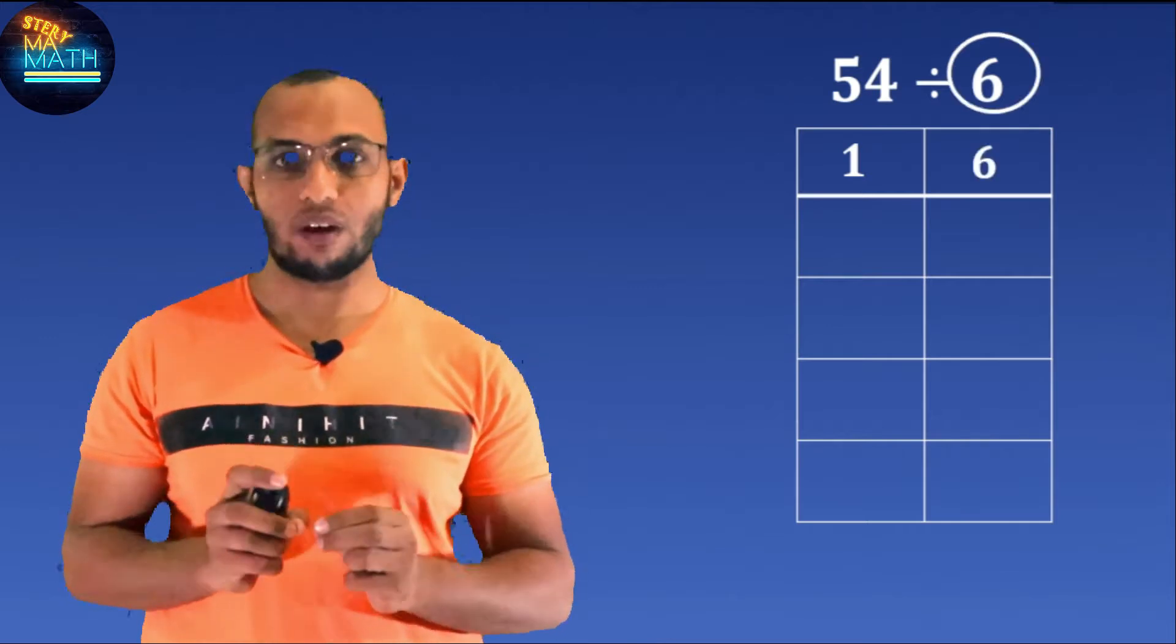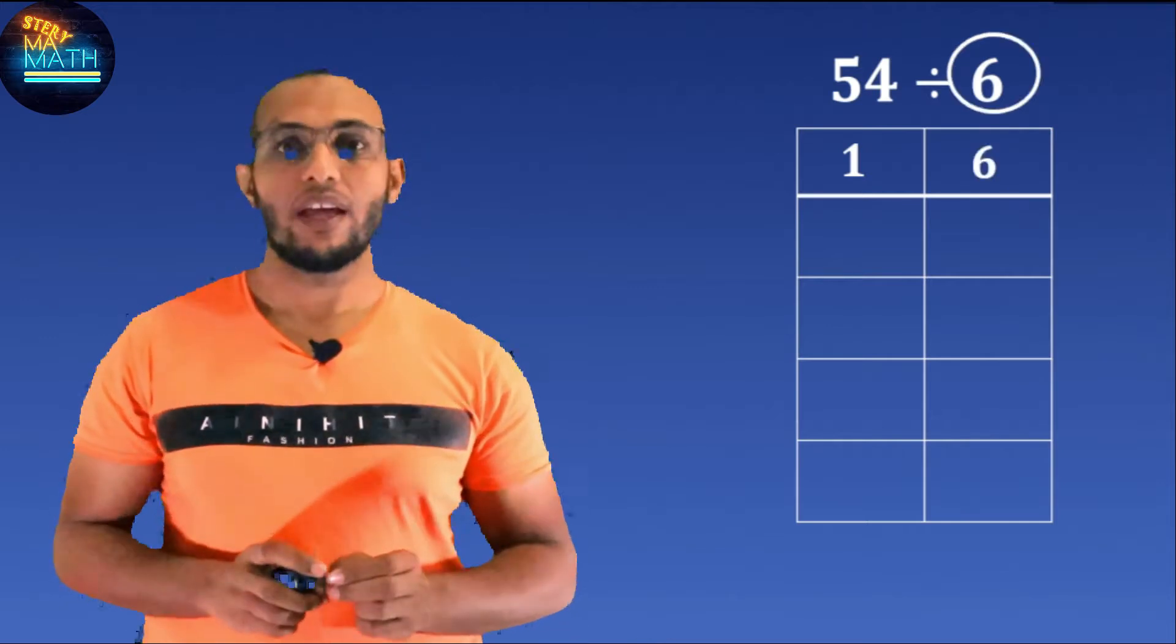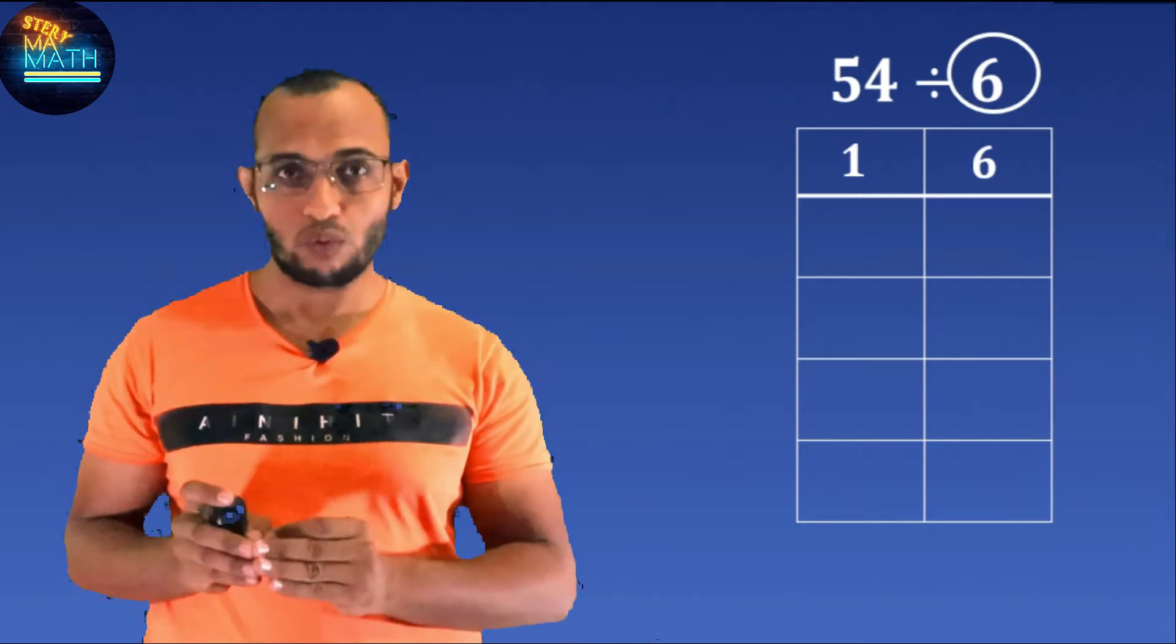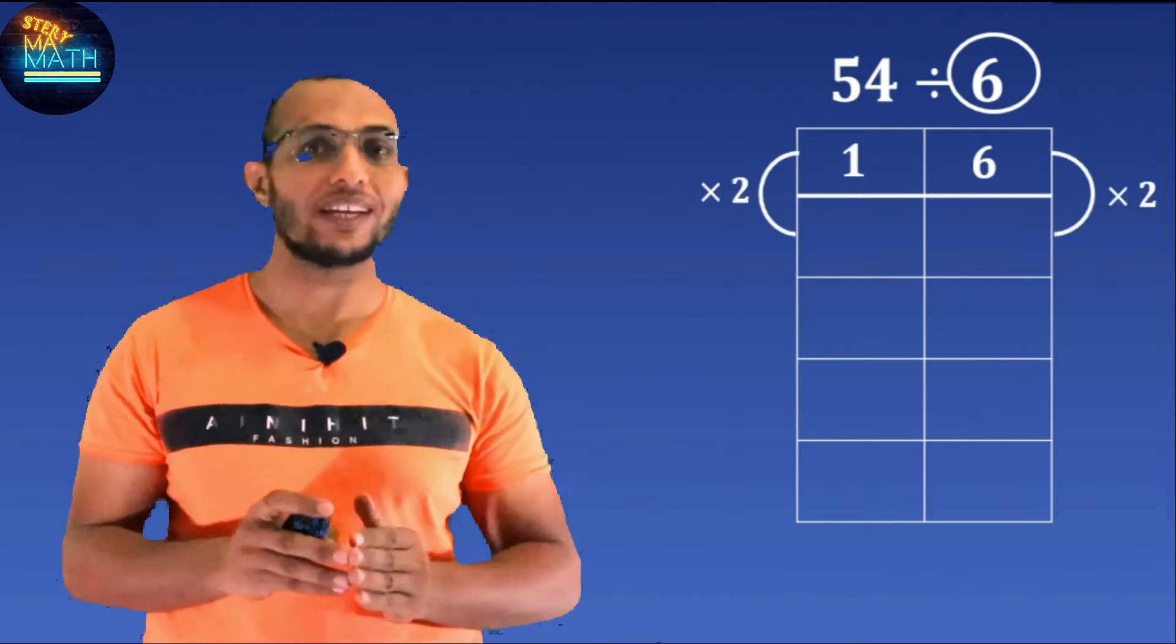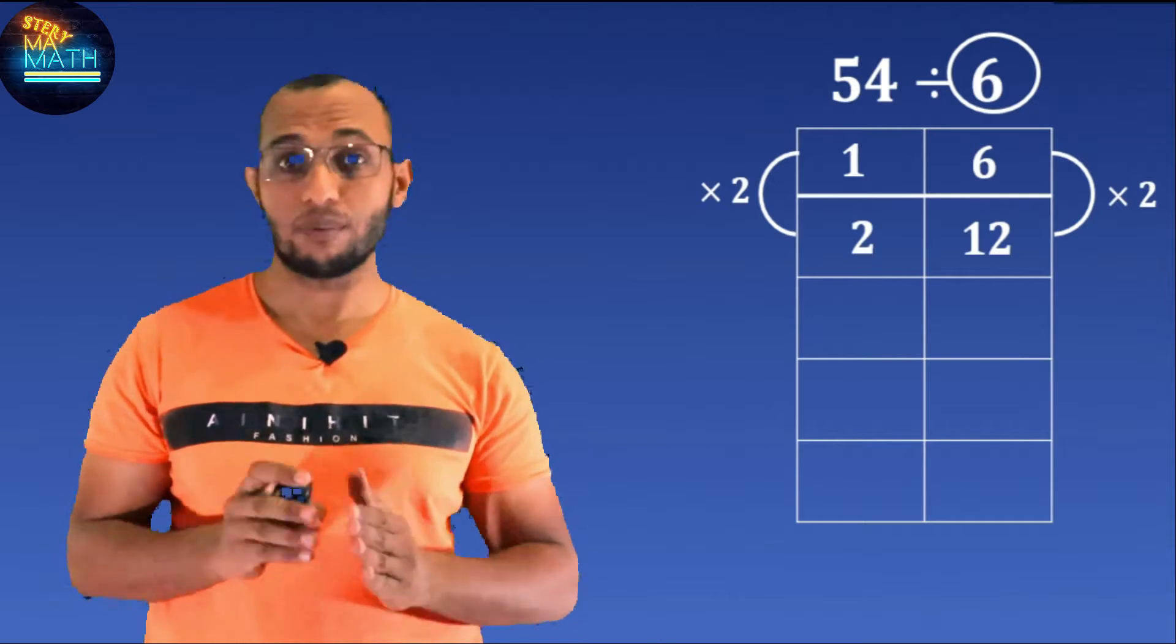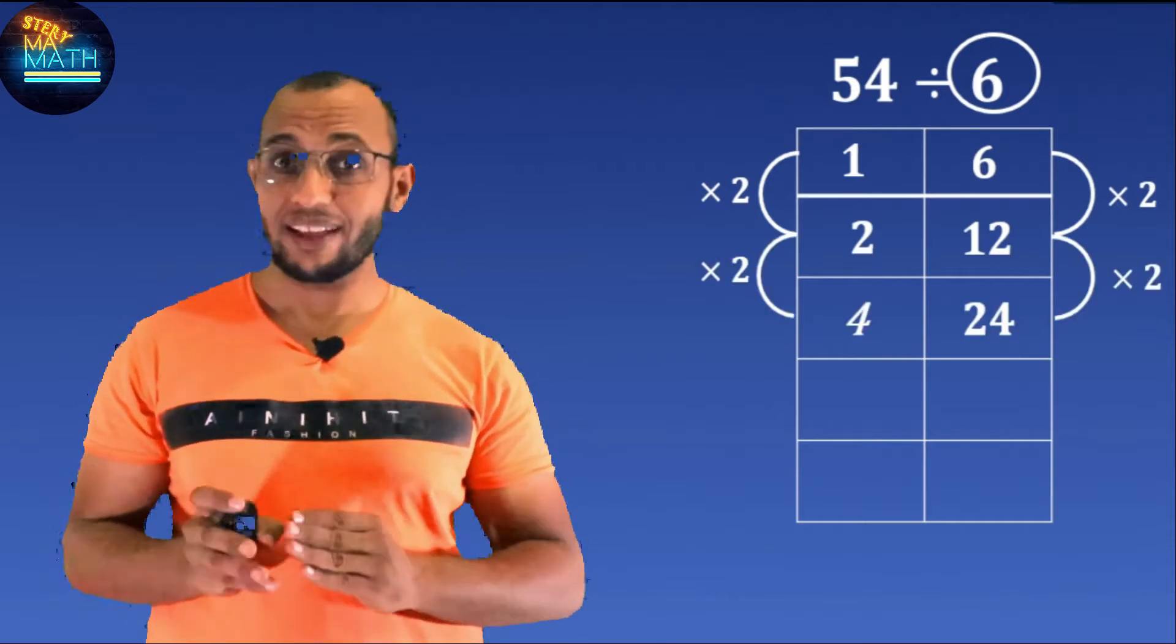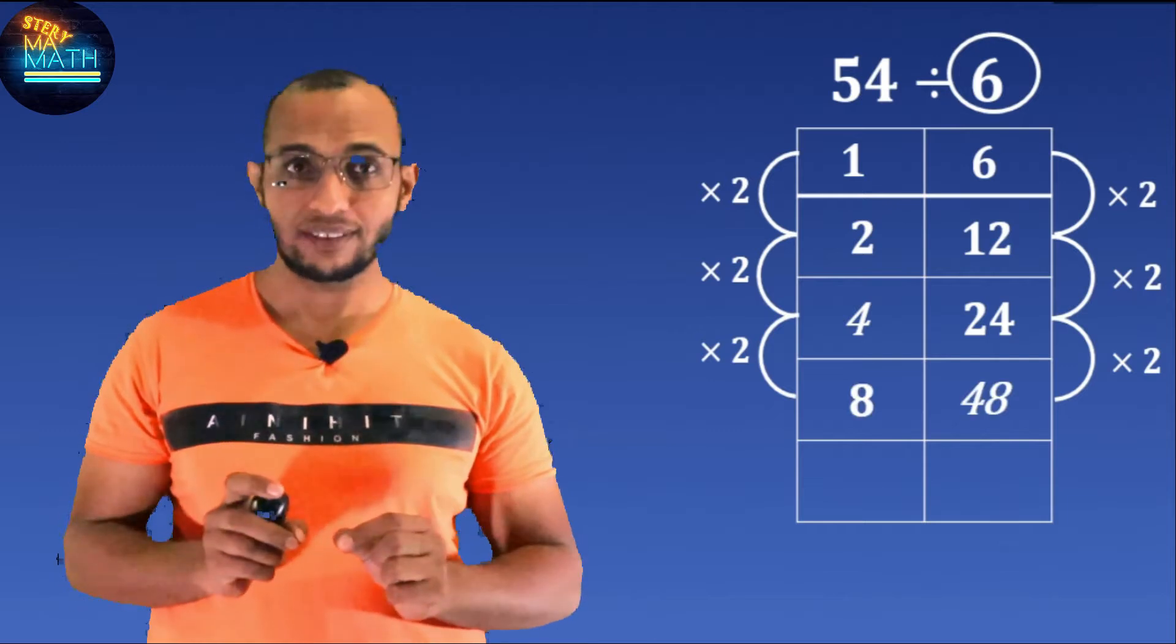Now go to the second row by doubling the first row, or multiplying by 2, to get 12 and 2. Double it again, you get 24 and 4. Double it again, you get 48 and 8.